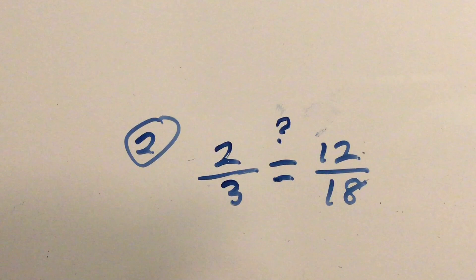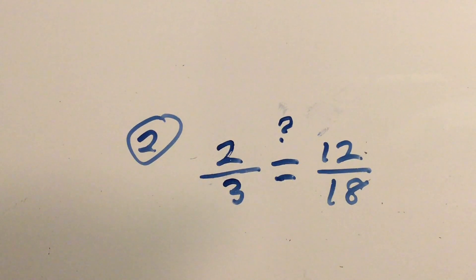So number 2 has these two fractions, 2 thirds and 12 18s, and the question again is, are they equivalent to each other? Are these two ratios proportional to each other? We're going to find out.